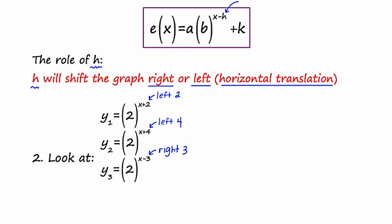On this slide we're again starting with the general template for any exponential function, but this time we're looking at the role of h. h will shift the graph either right or left — a horizontal translation. I've given you three functions to look at on the graphing calculator, and the base of each is 2, which is bigger than 1, so we'll have exponential growth. In the first example the exponent is x plus 2, shifting the graph left 2 units. The second has x plus 4, shifting left 4 units. The third has x minus 3, shifting right 3 units.